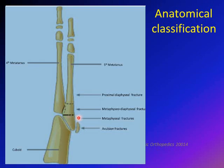Fractures in the metaphyseal part heal very quickly and don't need prolonged immobilization — the patient can be weight-bearing as tolerated. The metaphysio-diaphyseal area has minimal blood supply, so fractures there need prolonged immobilization. Fractures in the proximal diaphysis are usually stress fractures that most probably need surgical intervention.